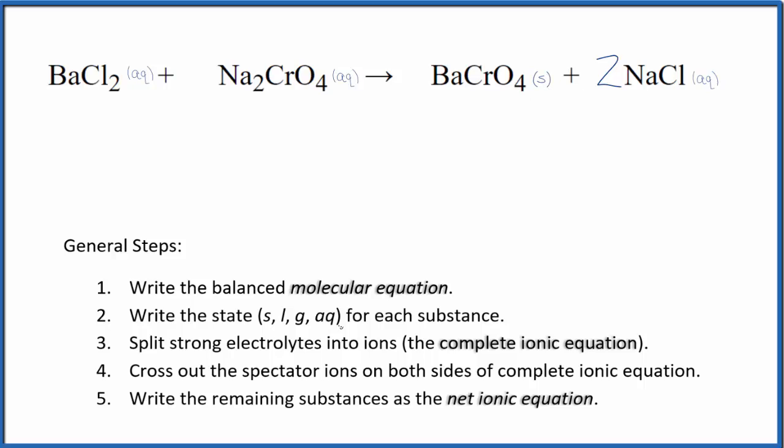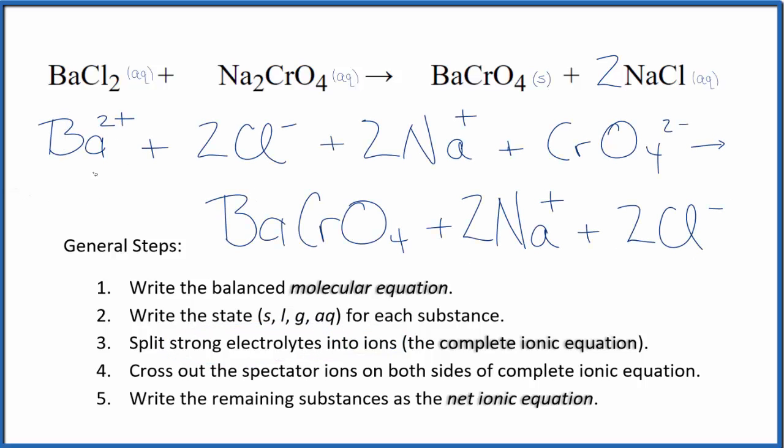Now that we have the states, we can split the strong electrolytes into ions for the complete ionic equation. That'll look like this. So this is the complete ionic equation. When we look at it, we split all the aqueous compounds apart. But the solid, this barium chromate here, we don't split that apart. So we keep this as a solid.